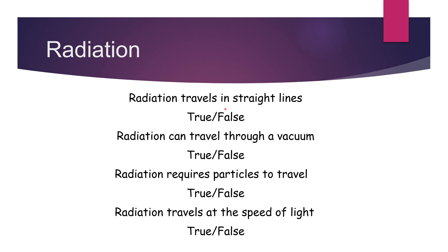Radiation travels in a straight line — that is true. Radiation can travel through a vacuum — that is true. Radiation requires particles to travel — that is false. And radiation travels at the speed of light — yes, that is true.